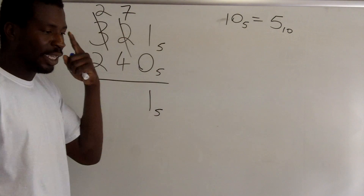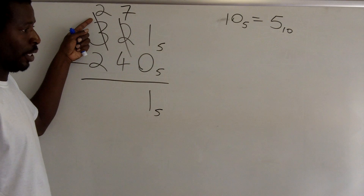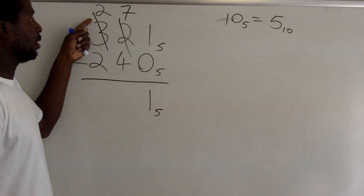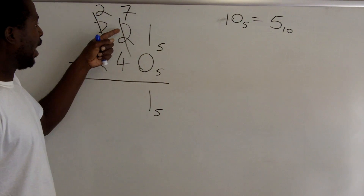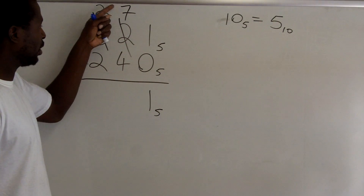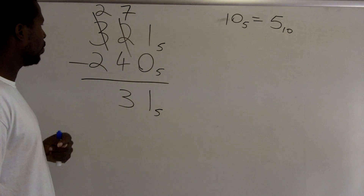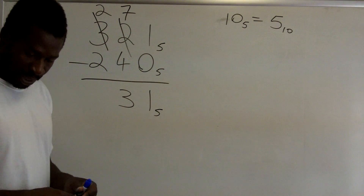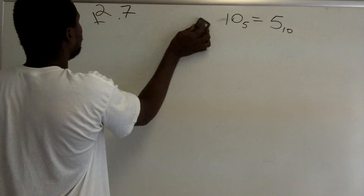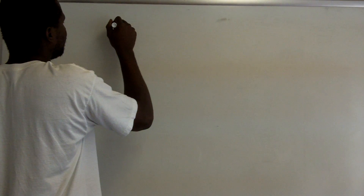It's a lot easier to do the calculation in base 10 that way. The one borrowed from the next column is what 10 would be in this base — and 10 in base 5 is actually the number 5. So I add 5 to the 2 to get 7, then subtract: 7 minus 4 is 3. Then 2 minus 2 is 0. So the answer is 31 base 5.